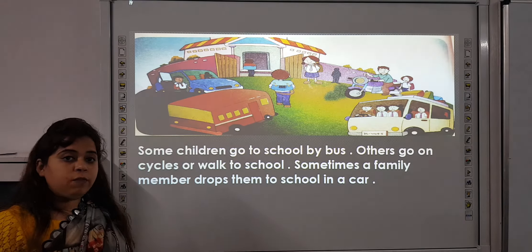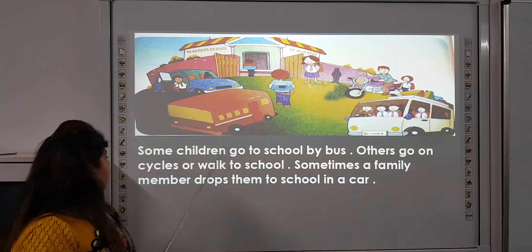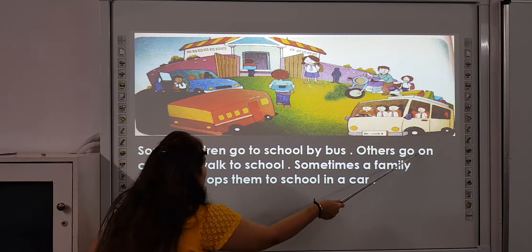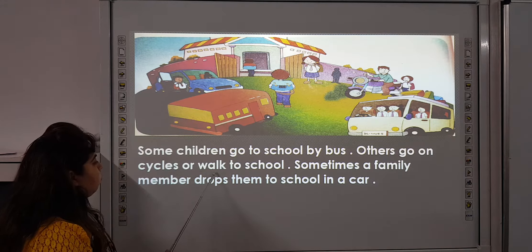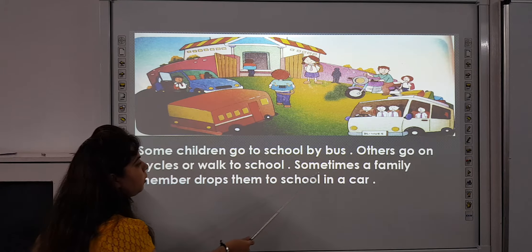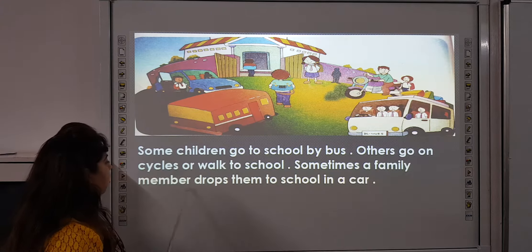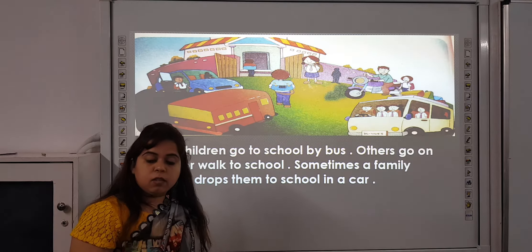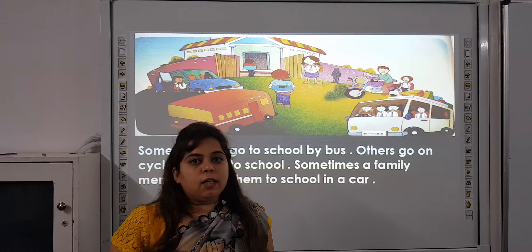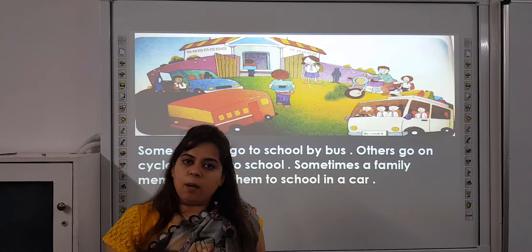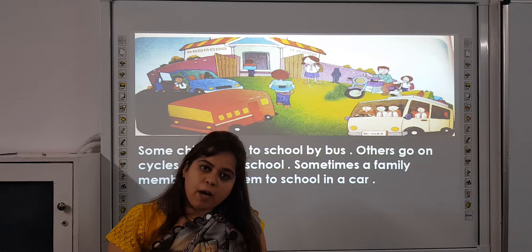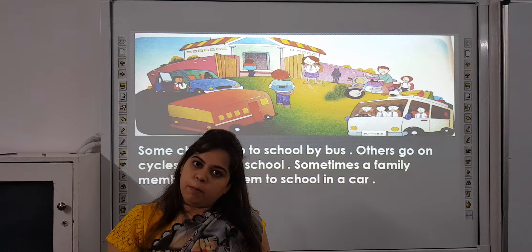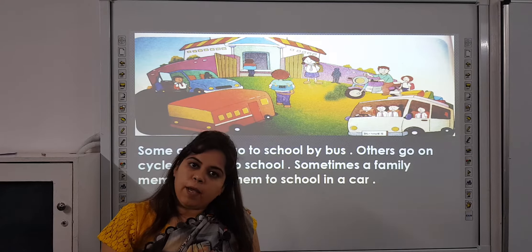Now we will see how do you go to school. Some children go to school by bus. Others go on cycles or walk to school. Sometimes a family member drops them to school in a car. Those who live near to school come by walking or by their bicycle. Those who live far away from the school come by van or by bus, or sometimes their parents drop them.